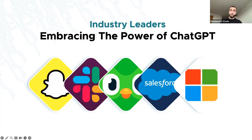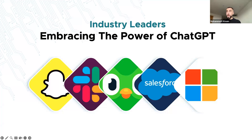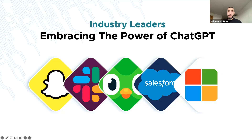Duolingo, the language-learning app, uses ChatGPT to power its conversational AI feature. This allows users to practice speaking and listening in a foreign language with a chatbot — for instance, practicing Spanish pronunciation and letters — enabling much faster language learning. Salesforce, one of the biggest CRM systems, uses ChatGPT to power something called the Einstein Bots.